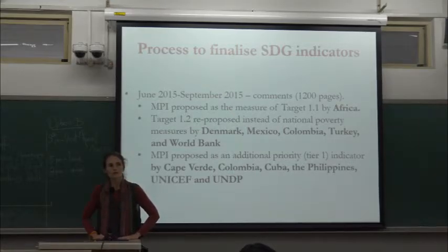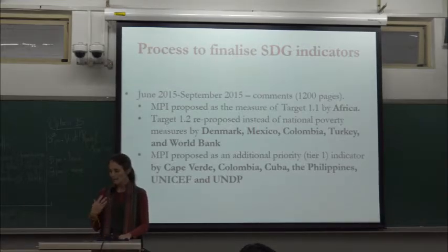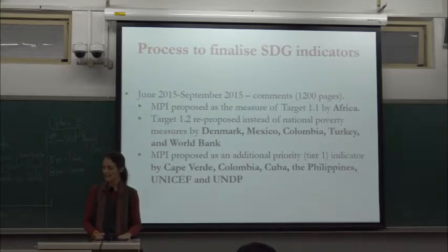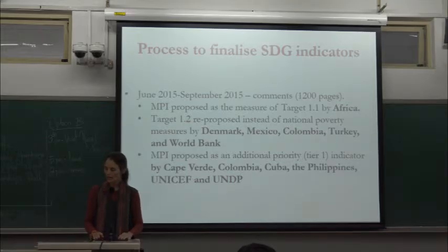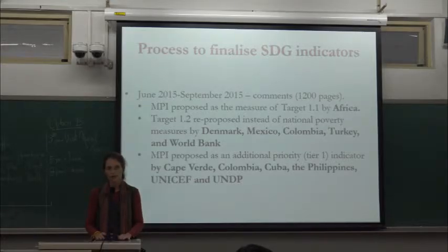After the June meeting, the Interagency Expert Group solicited comments and obtained over 1,200 pages of them. Africa proposed that the MPI be a target in 1.1 as well as 1.2. Other countries including Denmark, Turkey, Mexico, Colombia, and the World Bank re-proposed the MPI for Target 1.2, and it was also proposed as a priority Tier 1 indicator by a number of countries.